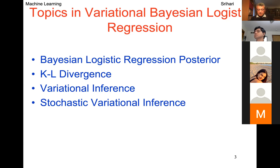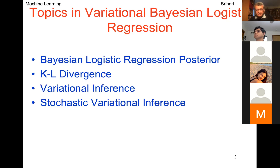In the Bayesian approach, we don't get a point estimate for the parameters — we don't say these are the values of w1, w2, w3, w4. We say the parameters have a distribution, with some values more likely than others. To get any specific value, we need to do integration over the probability distribution. We also bring in KL divergence — Kullback-Leibler divergence — a very interesting method to approximate one probability distribution by another.